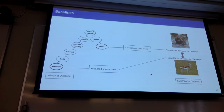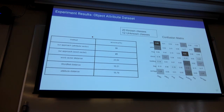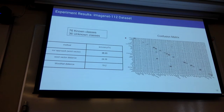We tried our model on the Animal with Attributes dataset with 40 known classes and 10 unknown classes. Our approach gives the best results compared to all baselines, and the attribute-based vector gives slightly better results than the word vector approach, which makes sense since attribute vectors are less ambiguous. We also tried it on an object attribute dataset with 20 known and 12 unknown classes, getting better results there too. Finally, on the ImageNet dataset with 76 known and 36 unknown classes, where we only had word vectors, it still gives better results than all baselines.